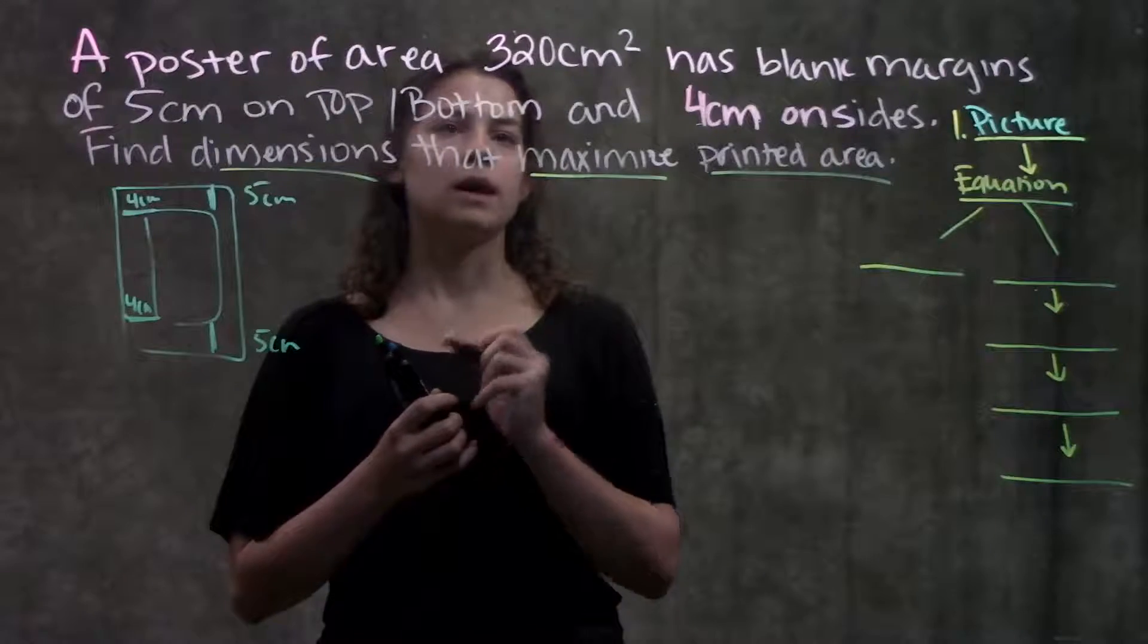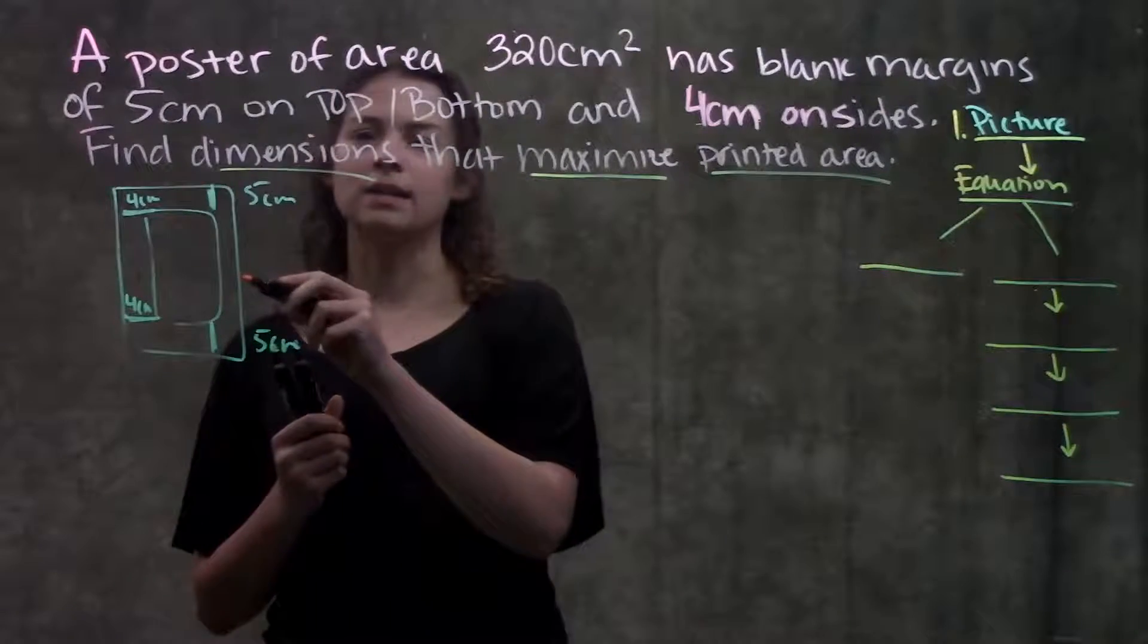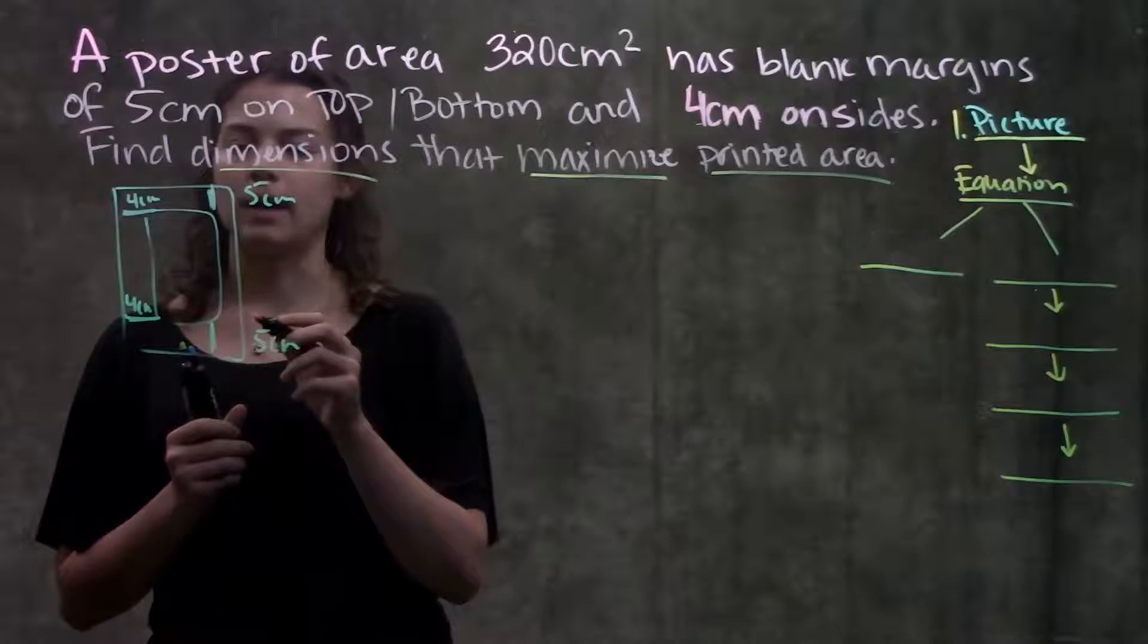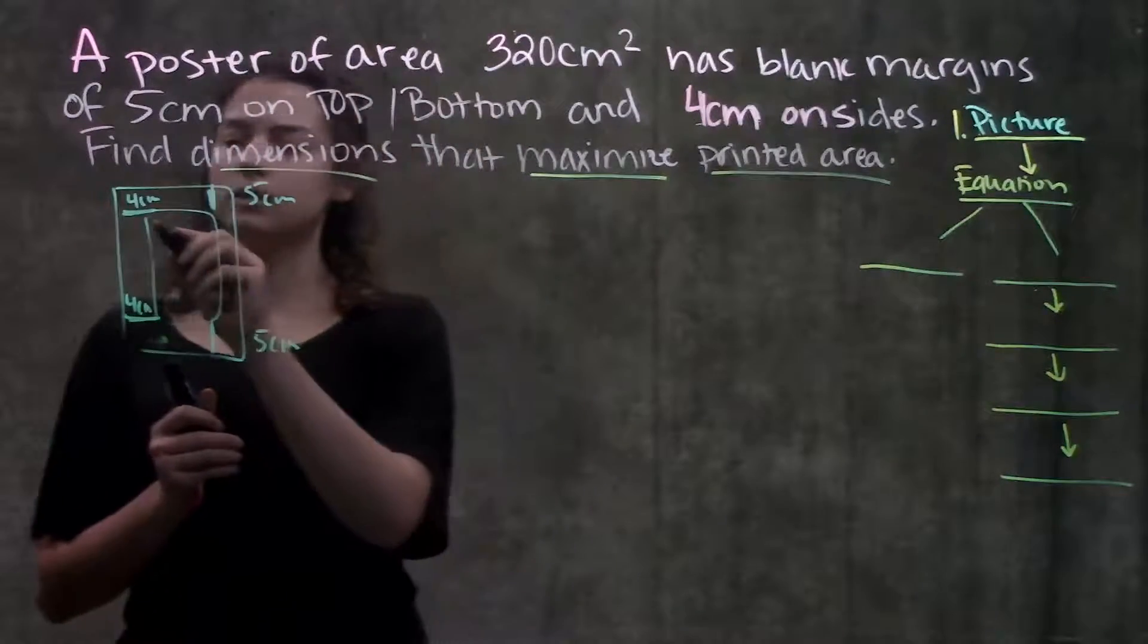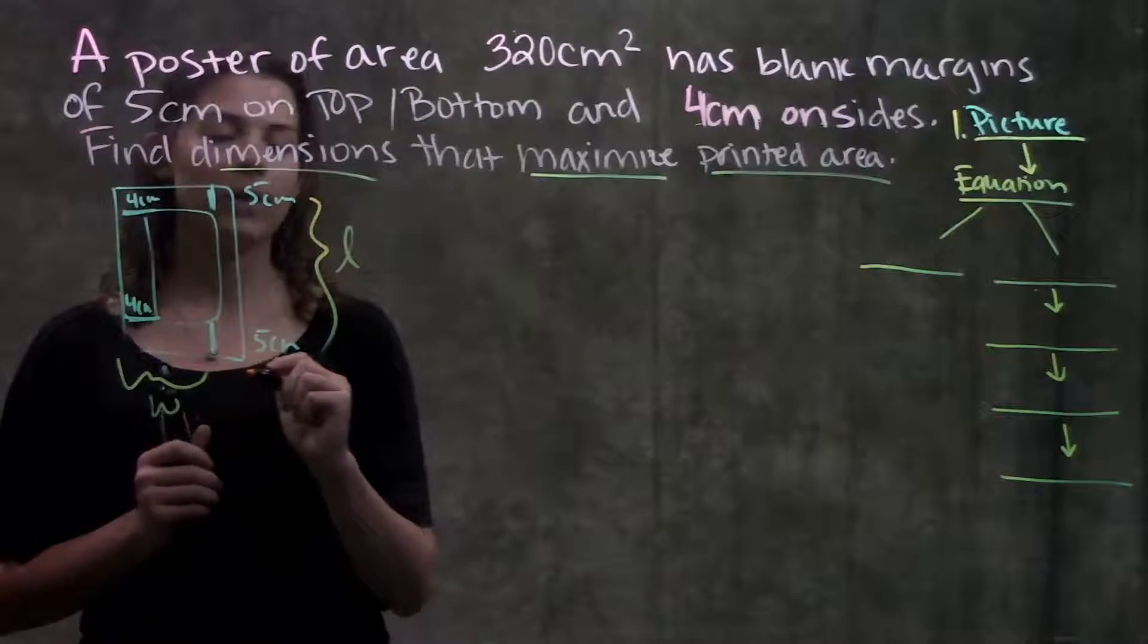Okay, so let's see what information they gave us. We know that the area of the entire thing is 320 cm². We don't know the area of the inside though, but let's go ahead and write an equation for this inside area. So let's label this part L for our length and this side W for our width.